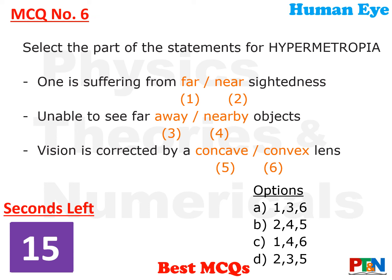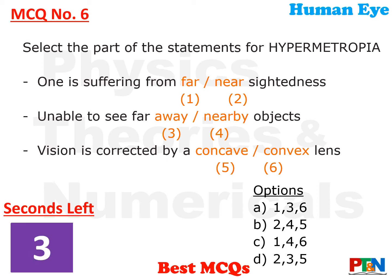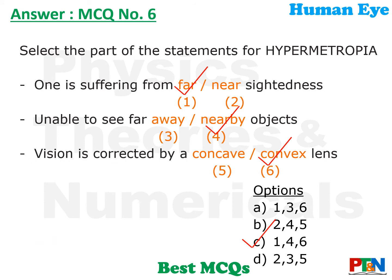Next MCQ: Hypermetropia. Three statements have been given for hypermetropia with options marked. You need to choose the correct options for hypermetropia. 15 seconds time. The answer is option C: hypermetropia is farsightedness. The person is unable to see nearby objects, and to correct the vision a convex lens is required.